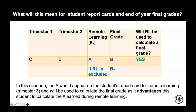What will this mean for a student's report card and end-of-year final grade? Let's take a scenario: if a student earned a C in trimester 1 and a B in trimester 2, and then earns an A during the remote learning period, that remote learning grade will be used to calculate the final grade because it advantages the student. The final grade would be a B. If the remote learning A were removed, the final grade would only be a B-minus, so the remote learning grade is included.